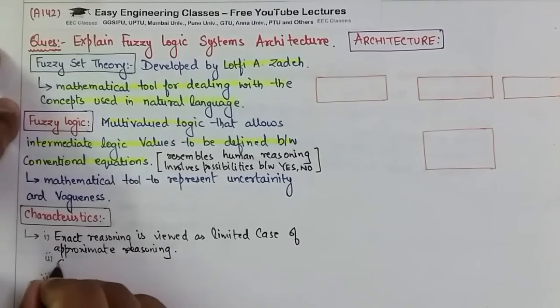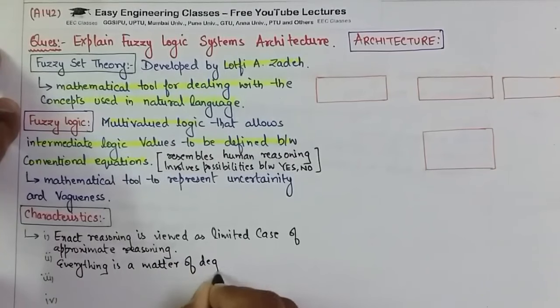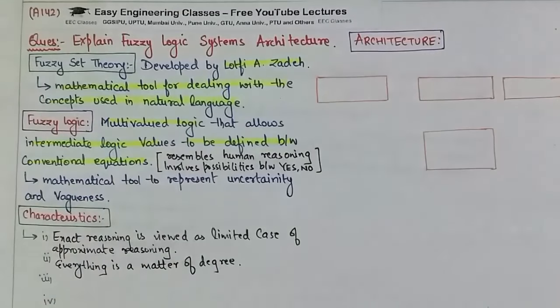Then second is everything is a matter of degree. This means that we can say our values are correct or how much degree we can say that it is true or false.